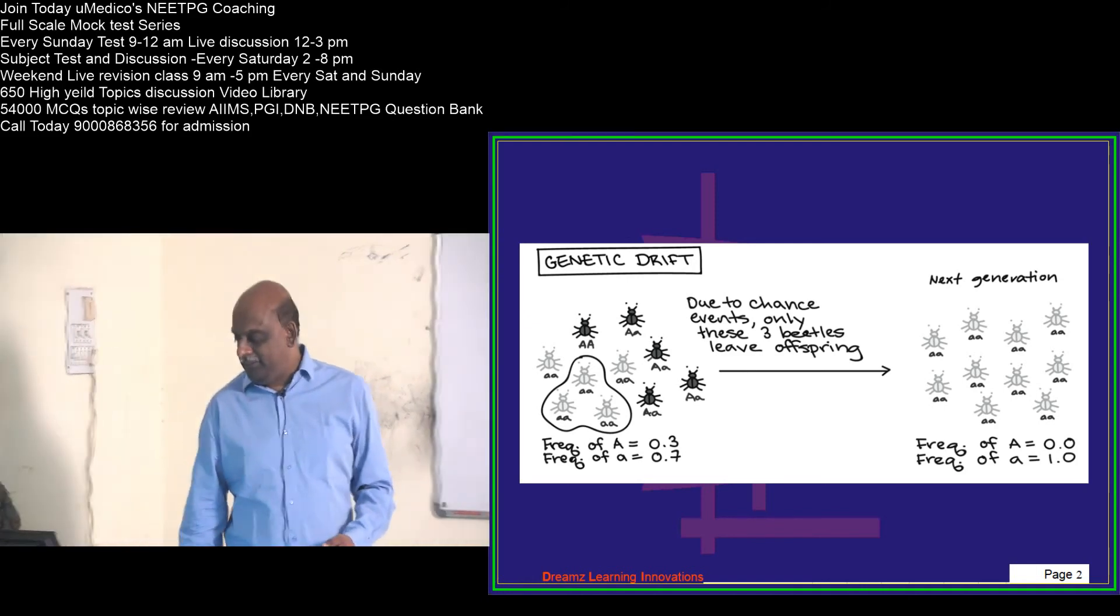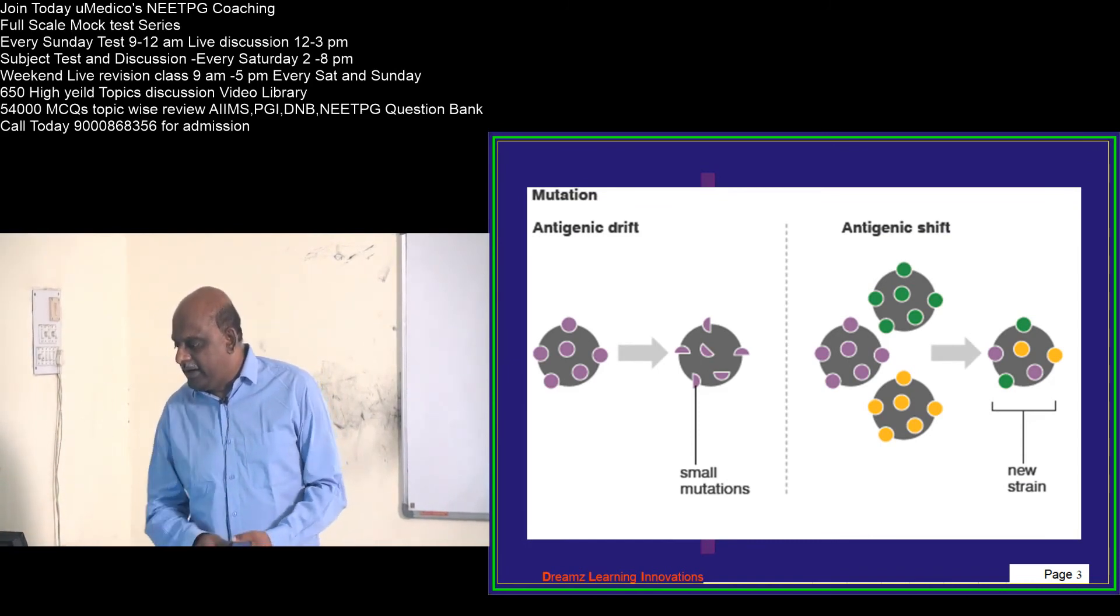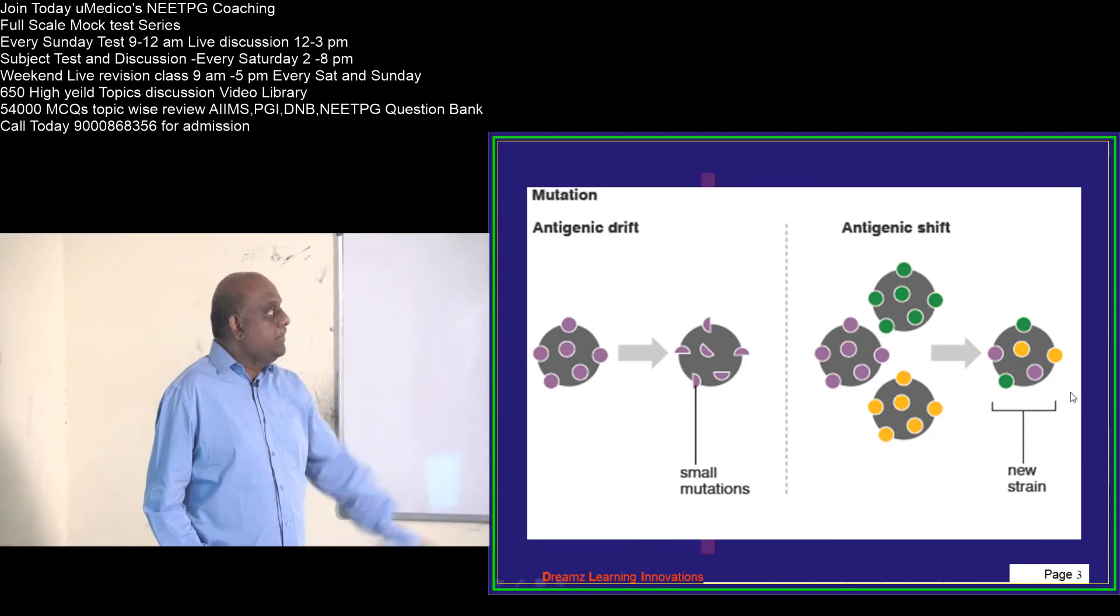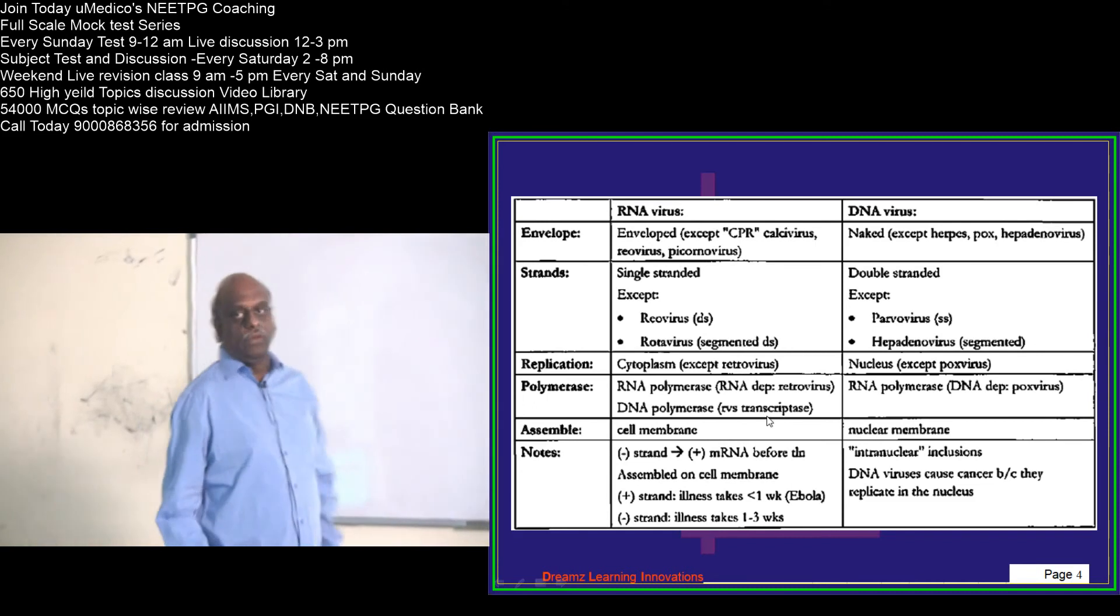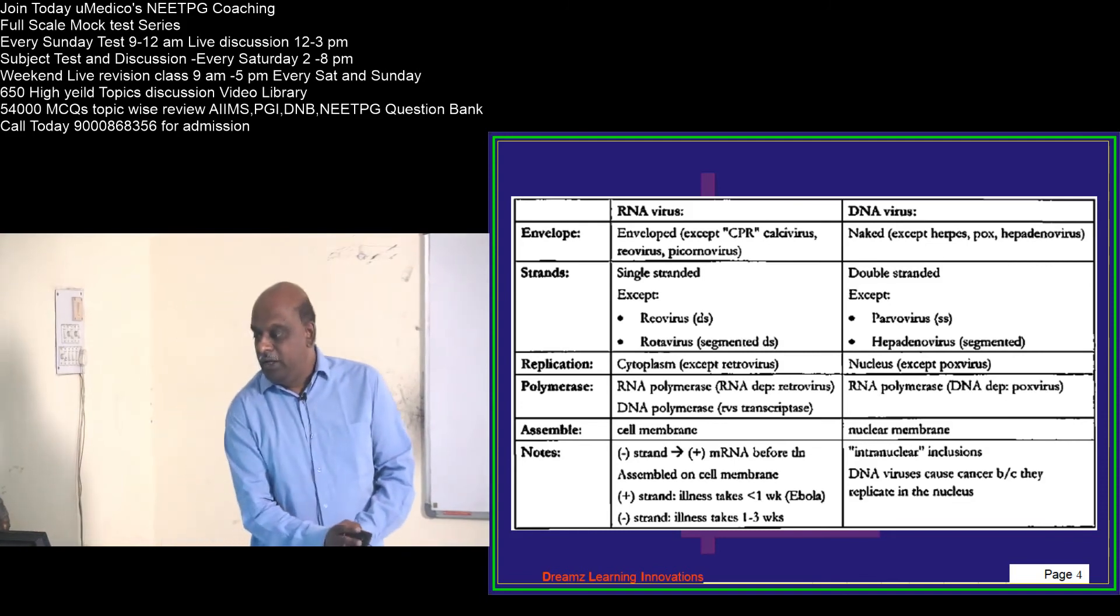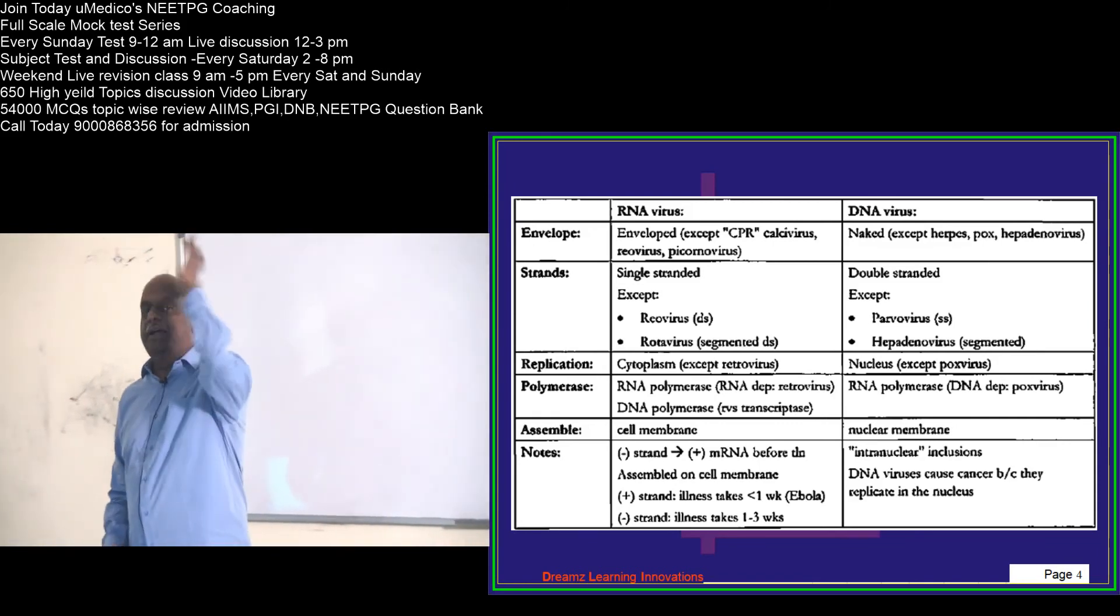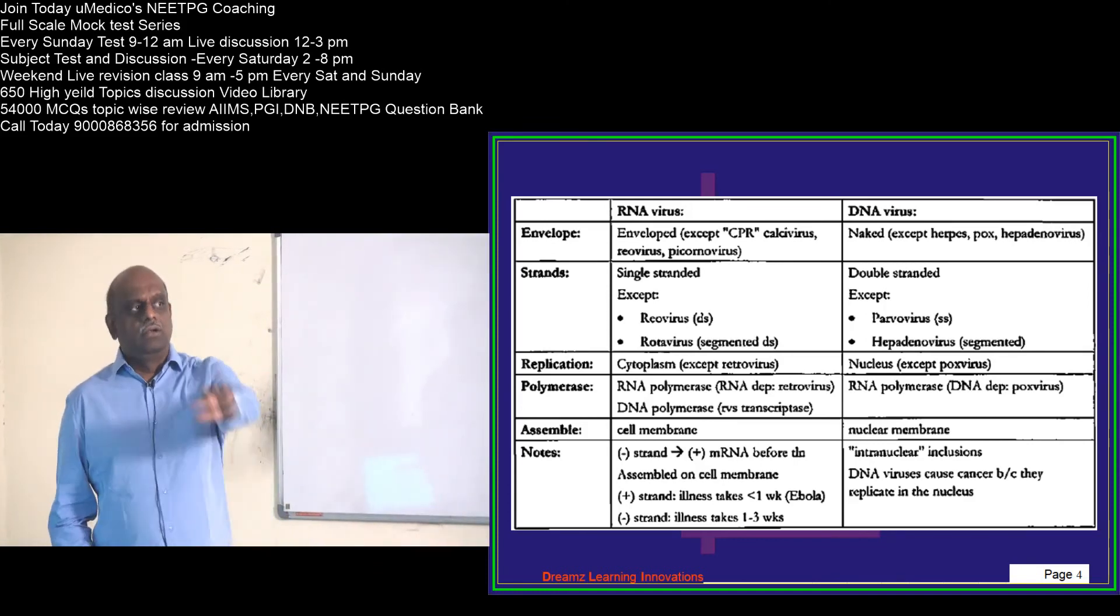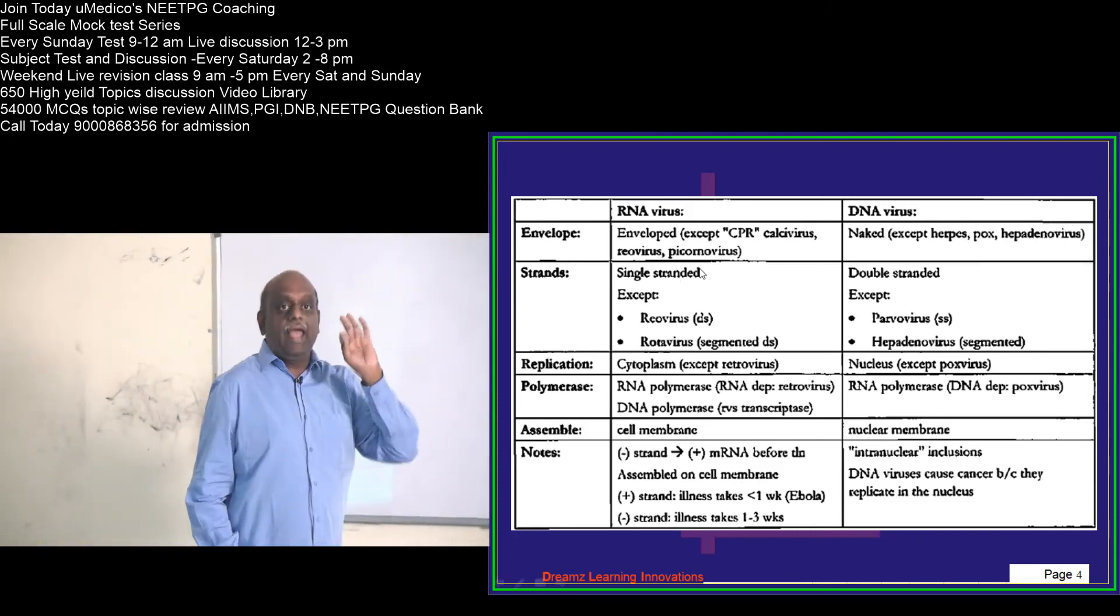Mutations lead to antigenic drift. Genetic reassortment leads to antigenic shift, which is what you have to ultimately remember. Now one of the favorite questions of the examiner is RNA viruses and DNA viruses. One question I will guarantee you will come from this table in the NEET PG paper.